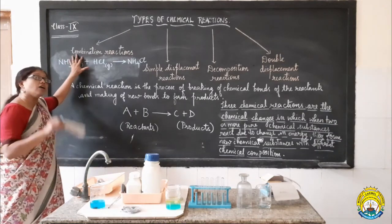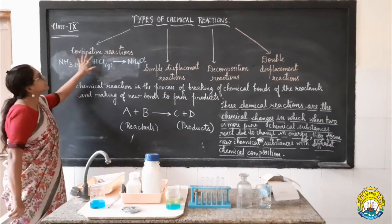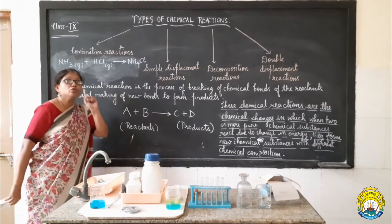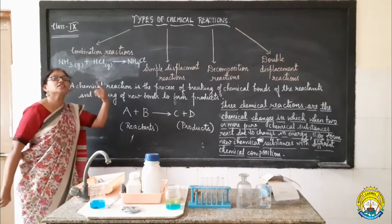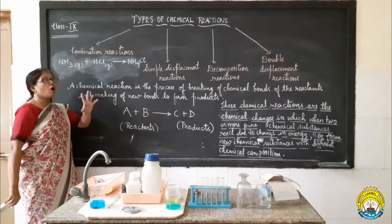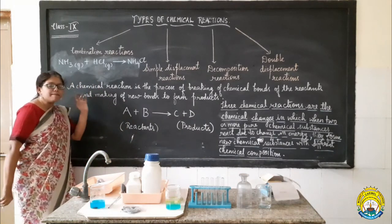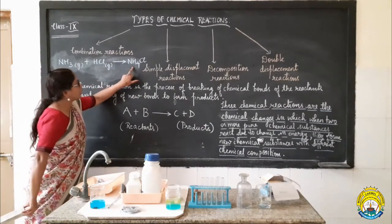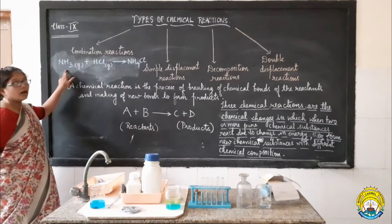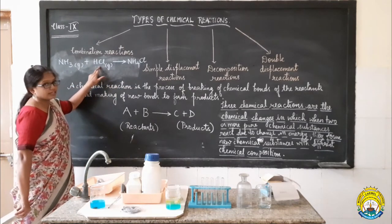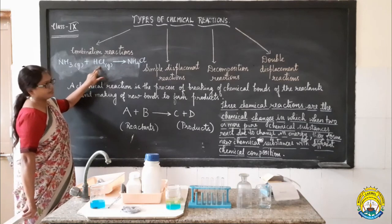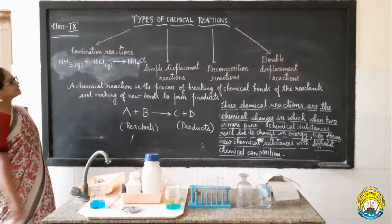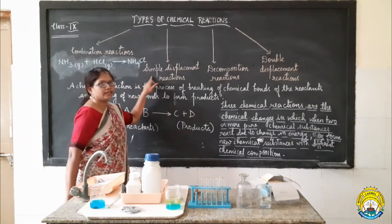Combination reactions are also known as synthesis reactions. What is the meaning of synthesis? It is to make something — to synthesize something from different simple substances. So we are synthesizing ammonium chloride from ammonia and HCl. So this is an example of a synthesis reaction also.